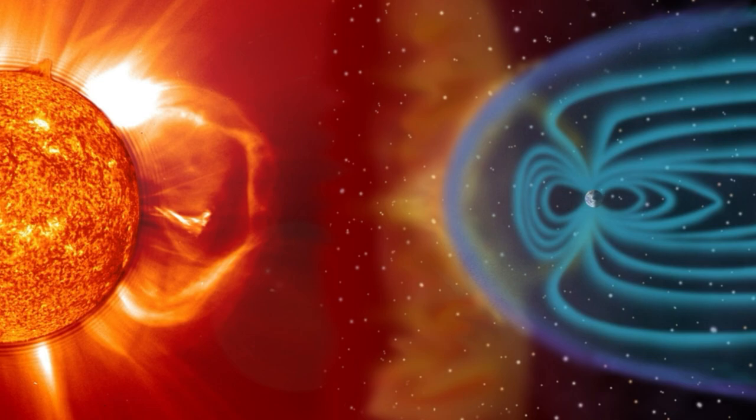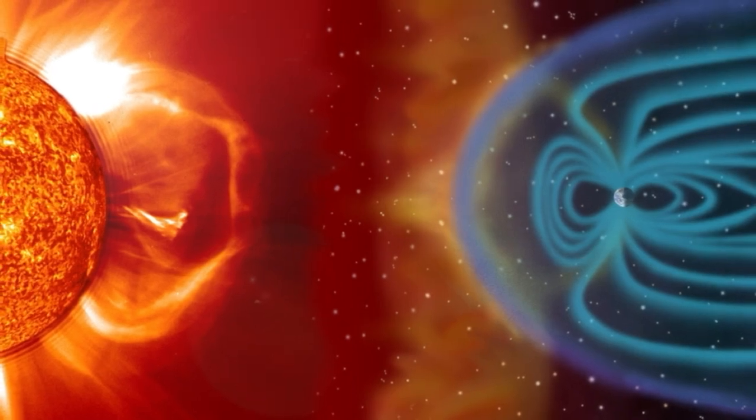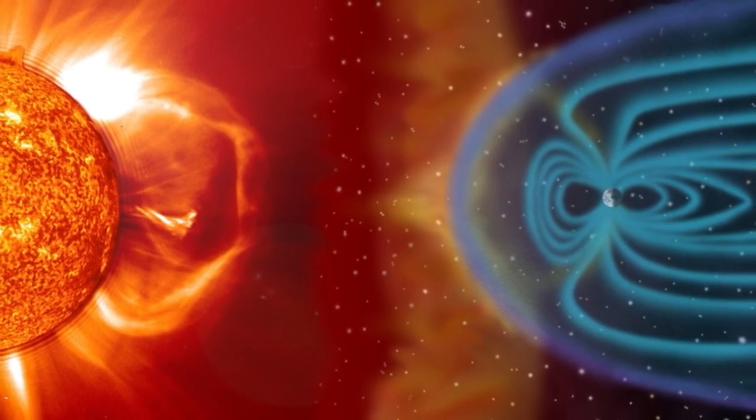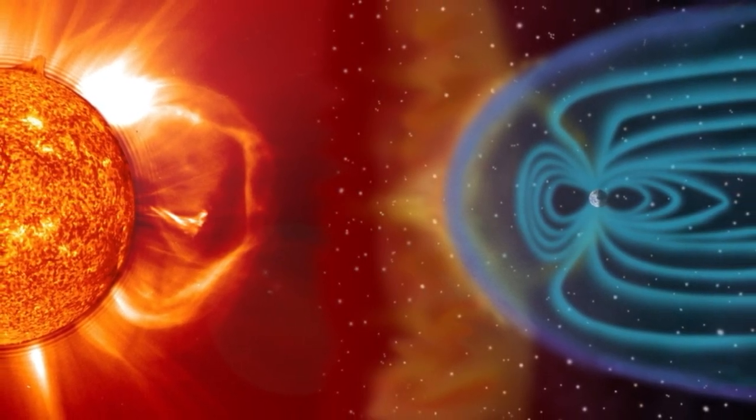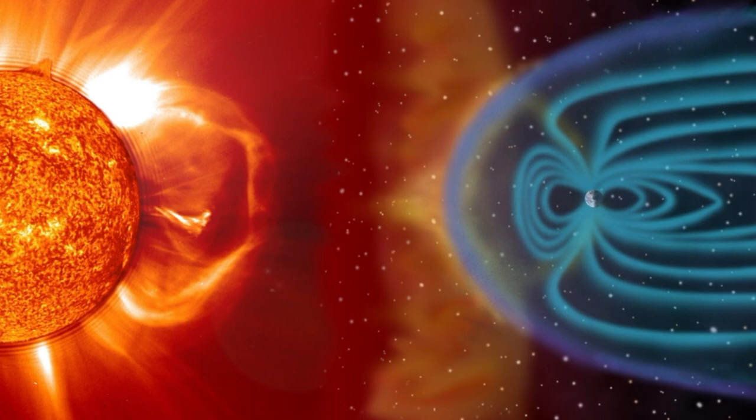Geomagnetic storms are triggered by CMEs, giant outbursts of charged particles released from the sun when magnetic field lines at the sun's surface become too tangled and suddenly snap. These magnetic tangles are often associated with sunspots,